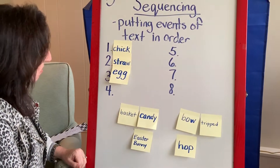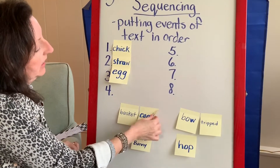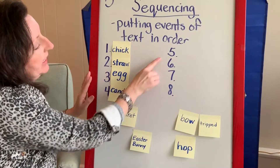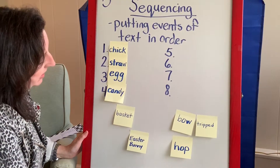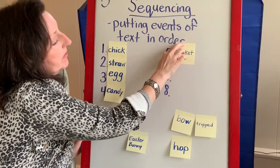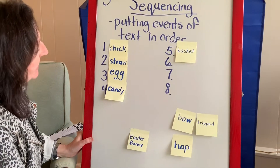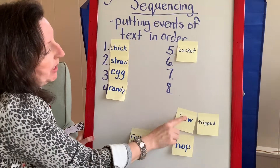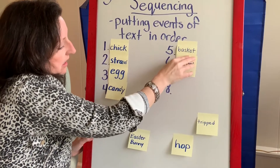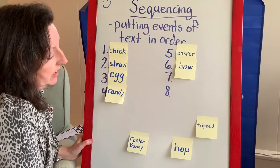Let's think about the fourth thing that she swallowed. After that egg, which one of these? If you said candy, you're right — she swallowed the candy, the fourth thing in the book. Now I need to see what the fifth thing is that she swallowed. Yep, it was the basket. Now we have Easter bunny, bow, tripped, and hopped. Let's think back to our story. The bow was next — she had to have a bow to put on that basket.